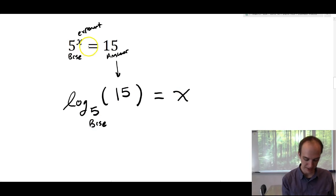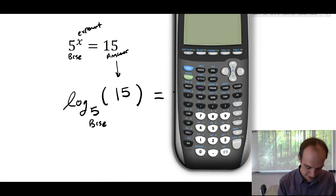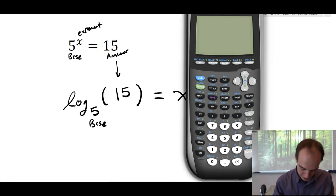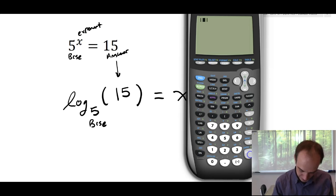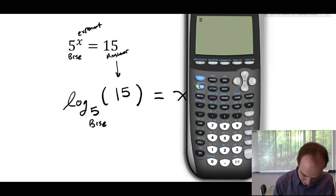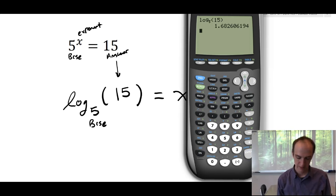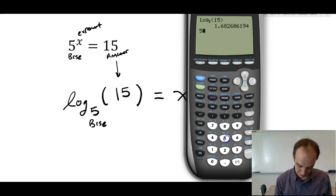And if you wanted to answer this question, 5 to what power is 15, then you could throw over to your calculator. You can watch my other videos on calculators if you want to see how to do these logs in a calculator. And you could do alpha window 5 and type in something like log base 5 of 15. Then if you take that answer and plug it back into the original, you could do 5 to the power of this, and you get something really close to 15. Your calculator is doing a little bit of rounding here.